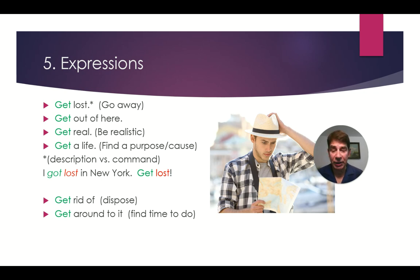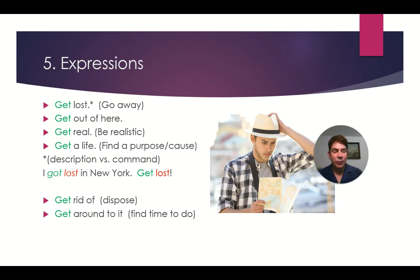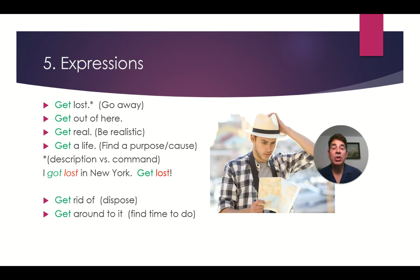Number five is expressions with GET. There are a lot of common expressions with the word GET. For example: get lost, which means go away; get out of here, which is even stronger — it means go away; get real, meaning be realistic; get a life, meaning find a purpose or find a cause. What's the difference between these expressions and other usages of GET? Often these expressions are commands.